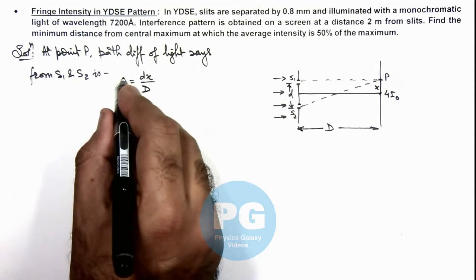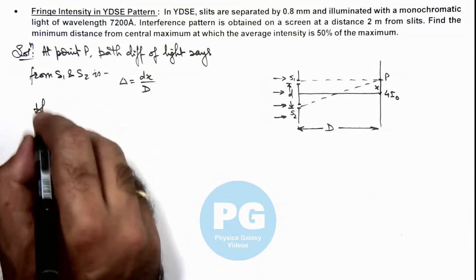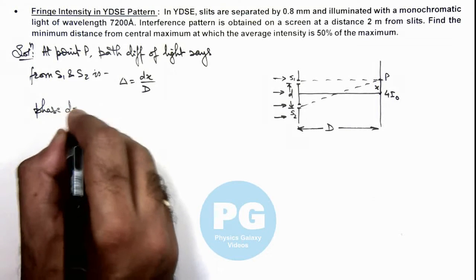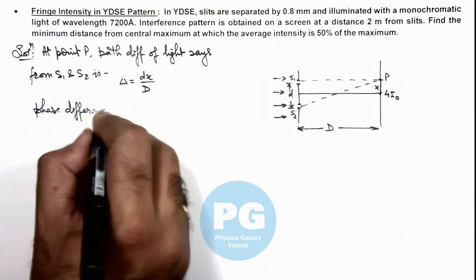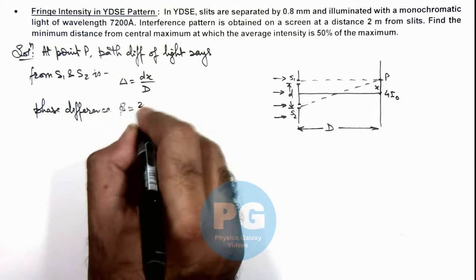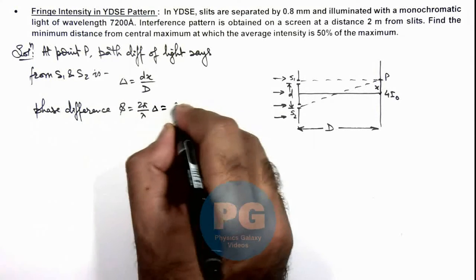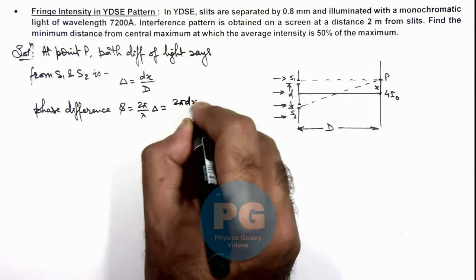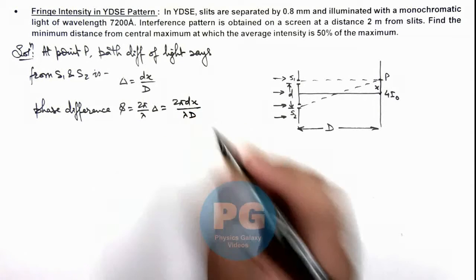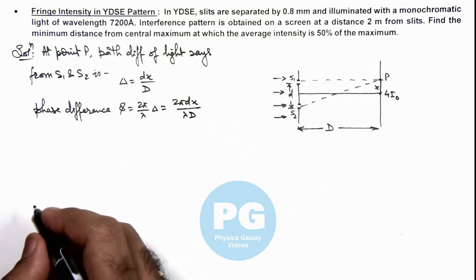And corresponding to this path difference we can calculate the phase difference φ as 2π by λ multiplied by δ, which is 2π dx by λD, and intensity.